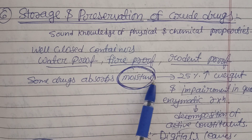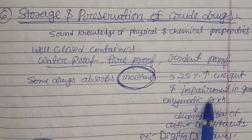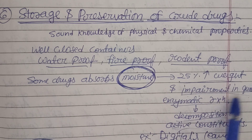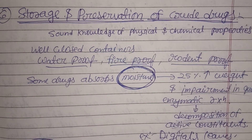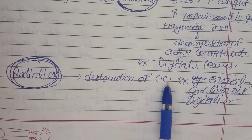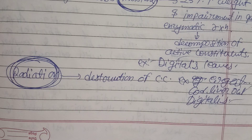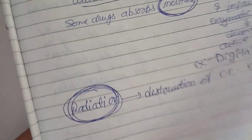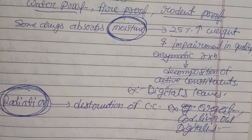The container should be well-closed, sometimes waterproof, fireproof, and rodent-proof, preventing attack by rats, insects, and cockroaches. Some drugs absorb atmospheric moisture and can increase in weight by 25%, causing impairment in quality and enzymatic reactions that decompose active constituents. For example, digitalis leaf decomposes by absorbing moisture. Radiation is another factor — it destroys chemical constituents of drugs like ergot, cod liver oil, and digitalis. By giving crude drug examples in this way, you can write complete answers and definitely get good marks.